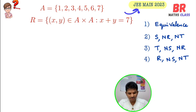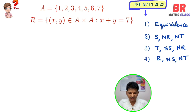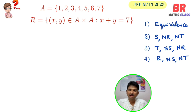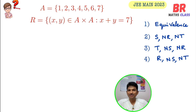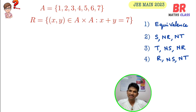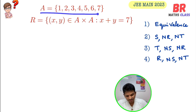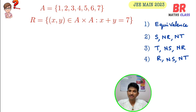Observe this question — it is from JEE Main 2023. This type of easy question we usually won't get, but a lucky batch may get it. They have given set A = {1, 2, 3, 4, 5, 6, 7} — all seven elements are there.